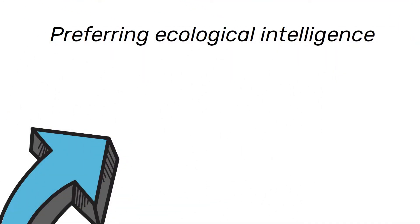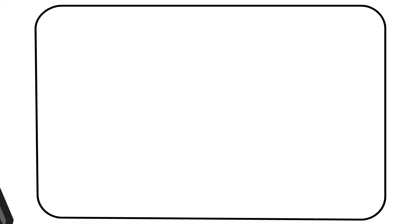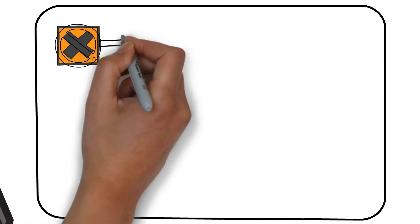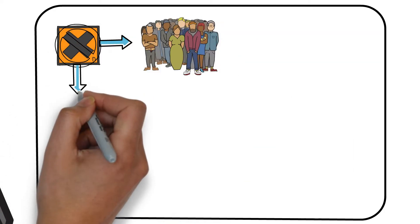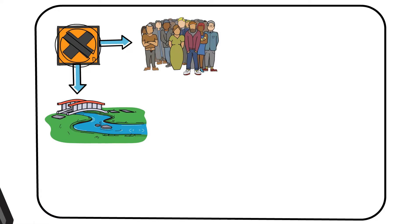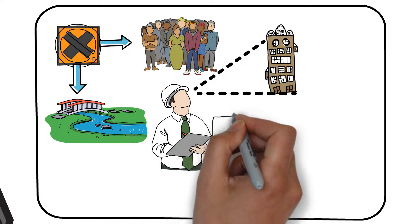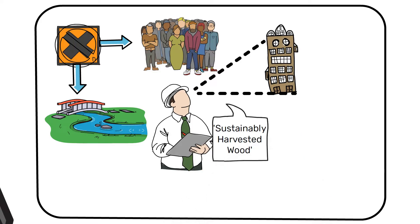Preferring ecological intelligence: Be as sure as you can that a product or substance does not contain substances and support practices that are harmful to human and environmental health. When working on a building, for example, the architects might prefer to use sustainably harvested wood.